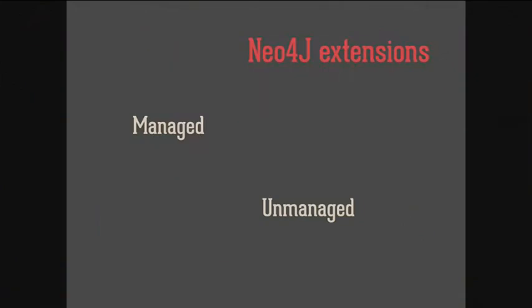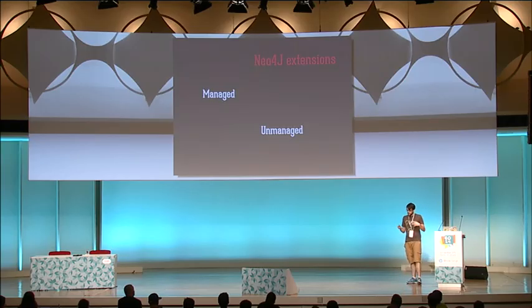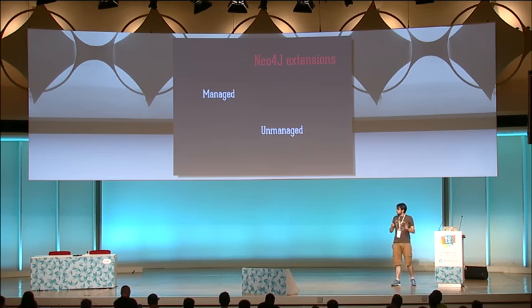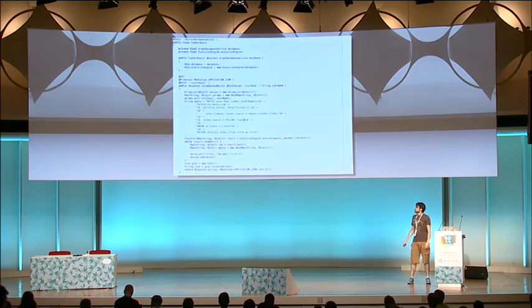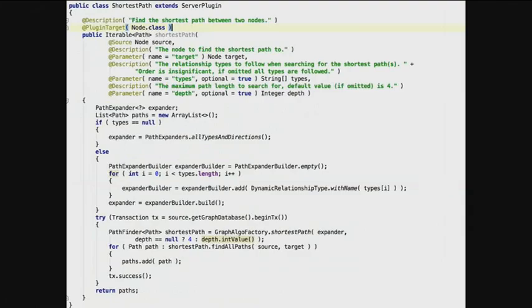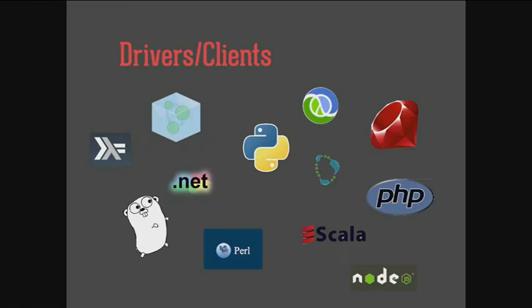Neo4j gives us a REST API to query, create nodes, and everything. There are occasions where we need to extend this REST API — we can extend Neo4j using managed or unmanaged extensions, writing algorithms using the traversal API and exposing them as endpoints. There are drivers for almost every language. If you want to use Python, I recommend Py2Neo, which also has a module for Django.